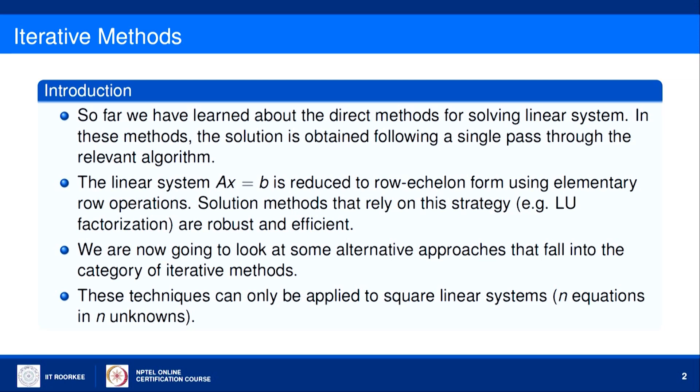In the beginning of this course we learned direct methods for solving linear systems. Some of them are Gaussian elimination and LU decomposition, where we write the coefficient matrix A as a product of two matrices L and U, where L is a lower triangular matrix and U is an upper triangular matrix, and then using forward and backward substitutions we solve the system.